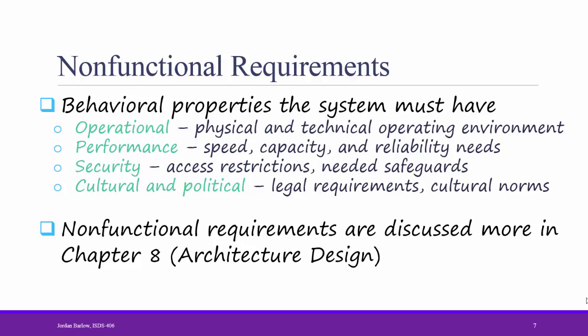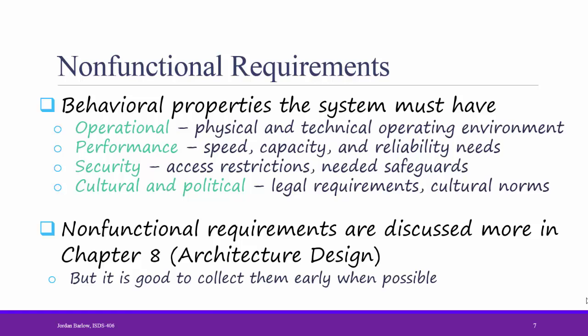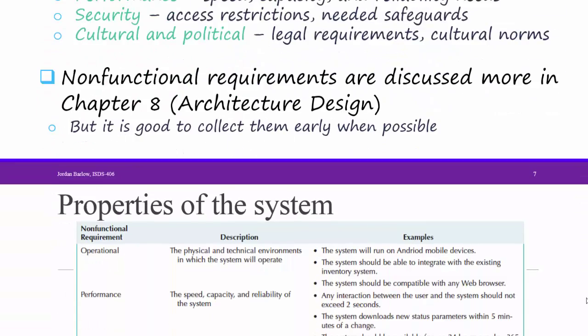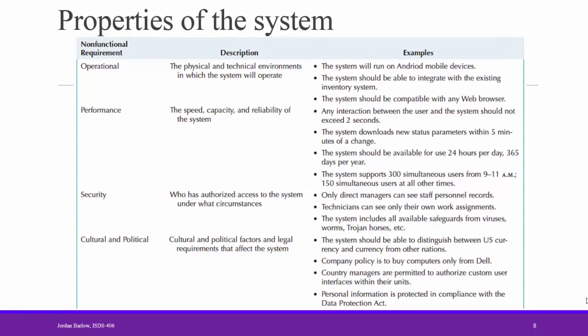It's good to understand and collect non-functional requirements as early as possible in the systems development lifecycle. We want to focus first and foremost on the functional requirements in order to understand exactly what the system should do for the user. However, the effect of ignoring non-functional requirements can be devastating and could cause the project to fail. Here are some more examples from the textbook of each of the four types of non-functional requirements. Feel free to pause and take a look through these examples.